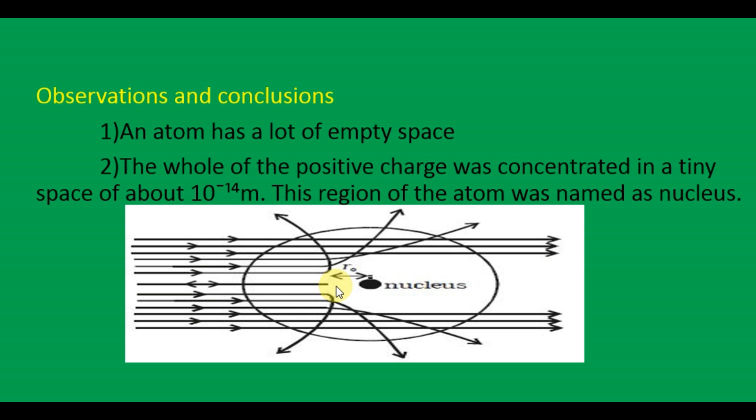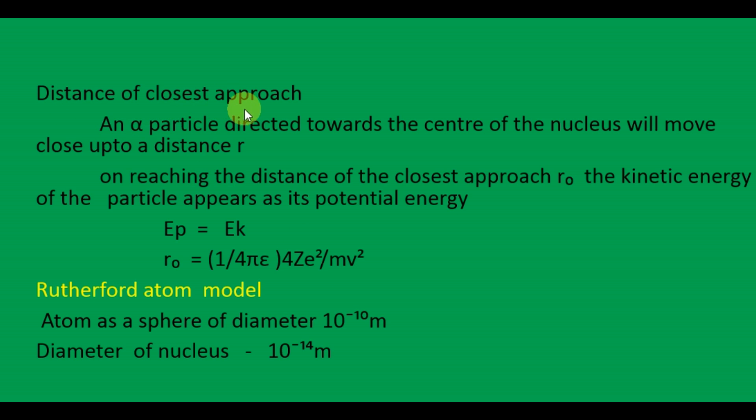An alpha particle directed towards the center of the nucleus moves close up to the distance of closest approach R0. On reaching R0, the kinetic energy of the particle is fully converted into potential energy, so EP equals EK — the alpha particle stops and does not touch the nucleus.